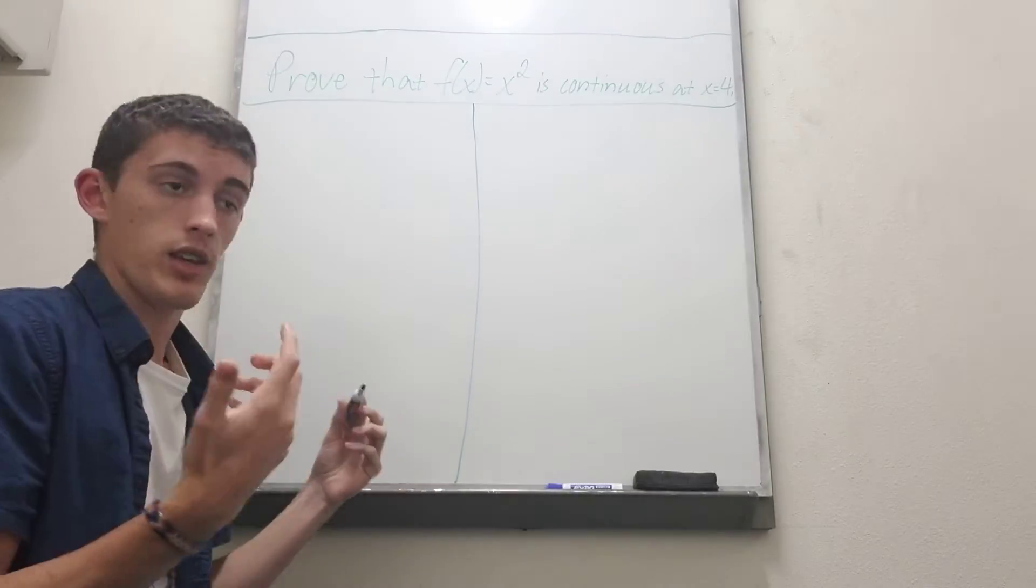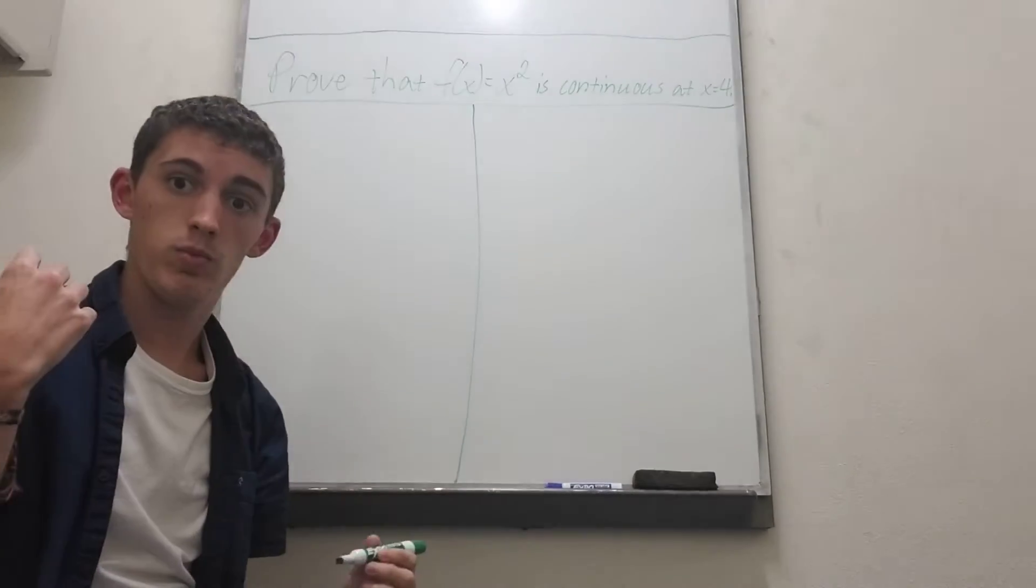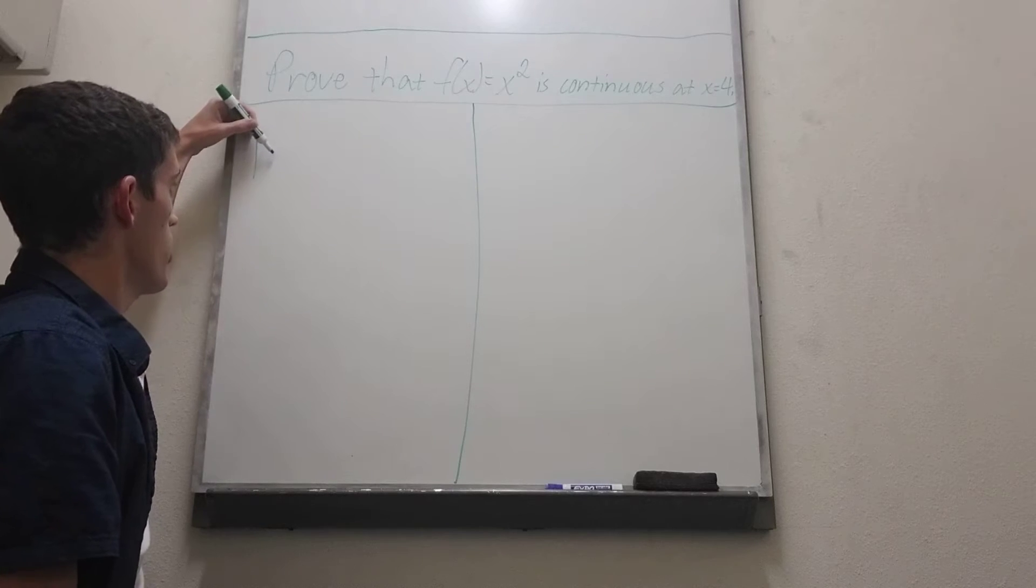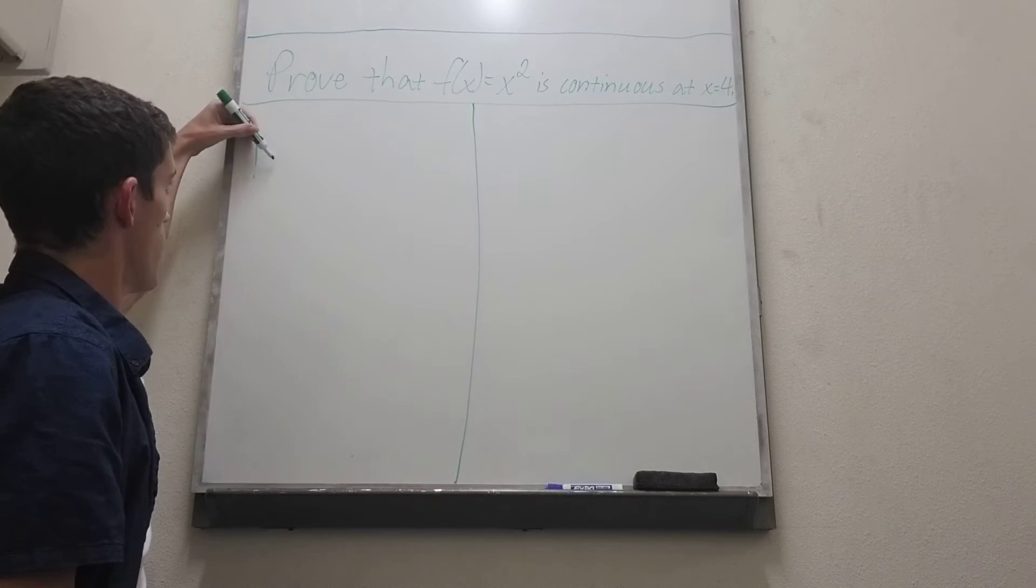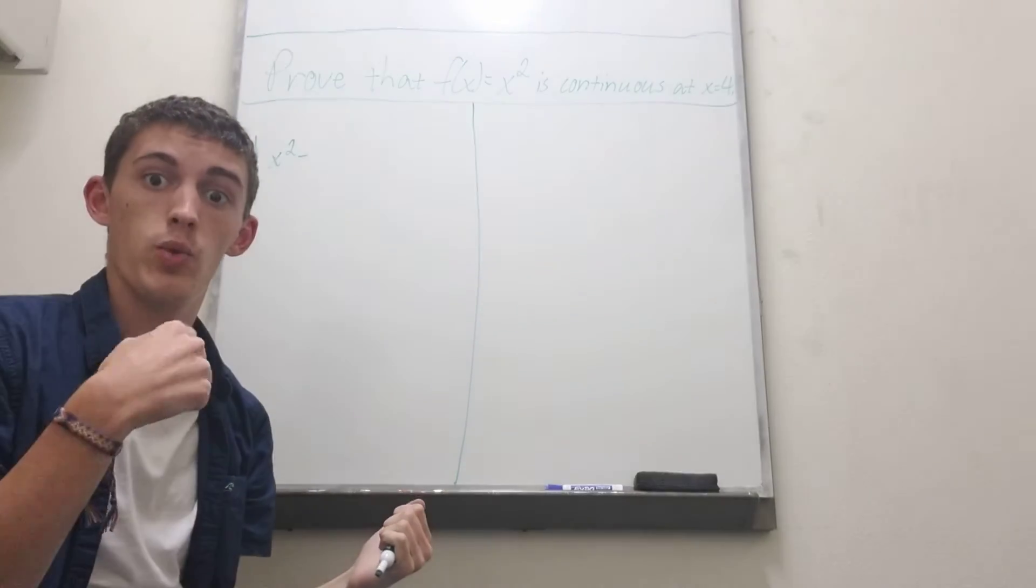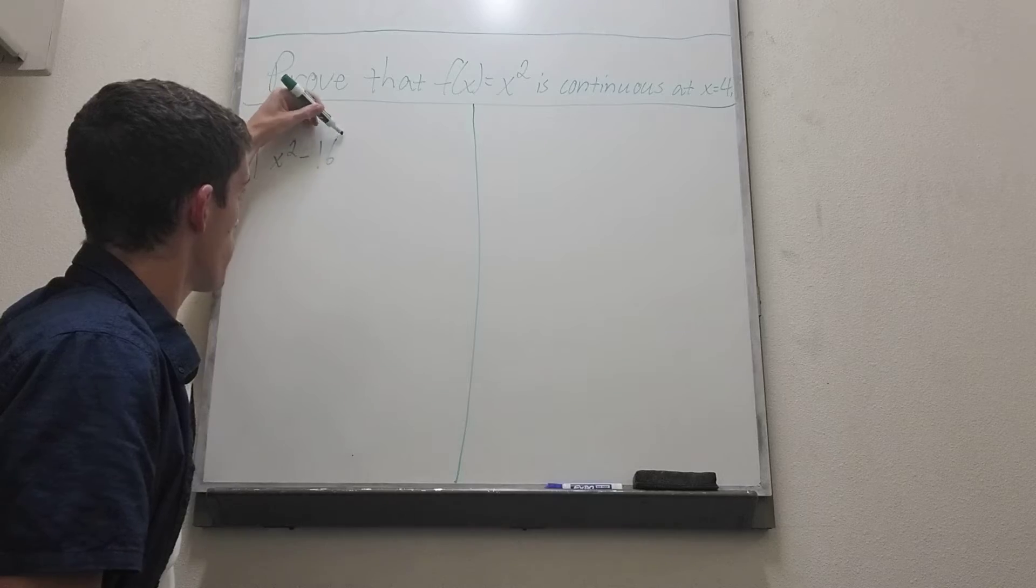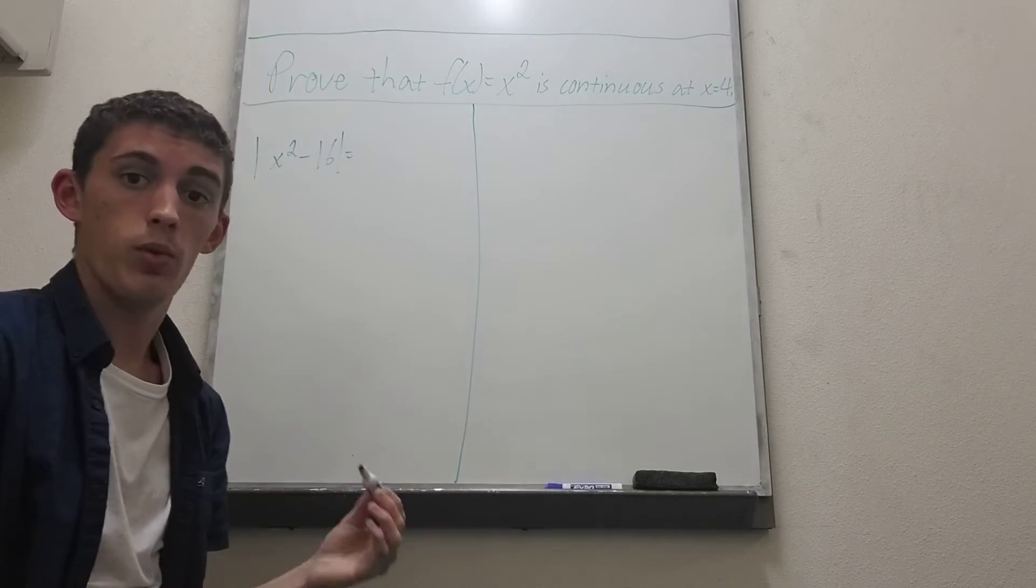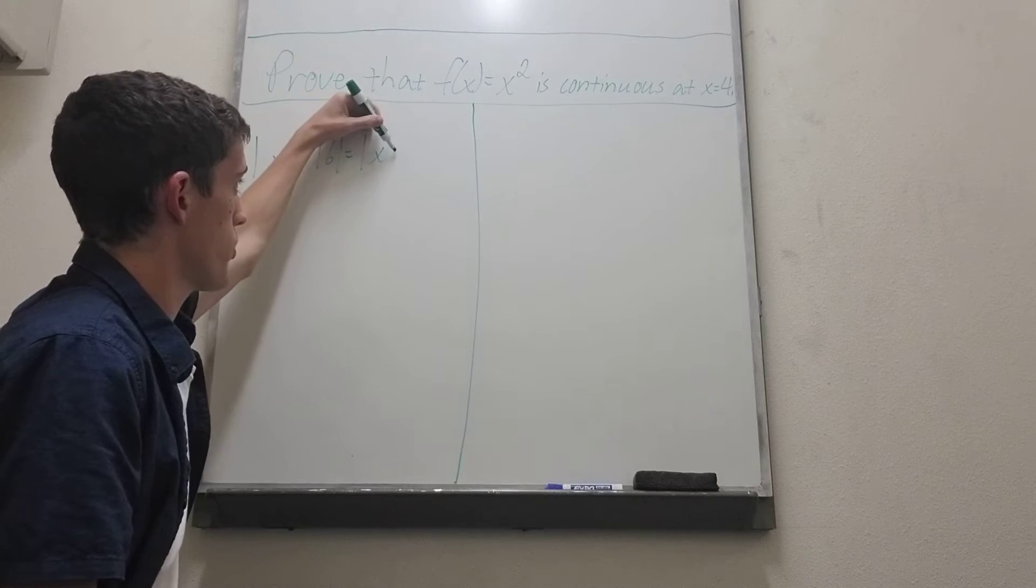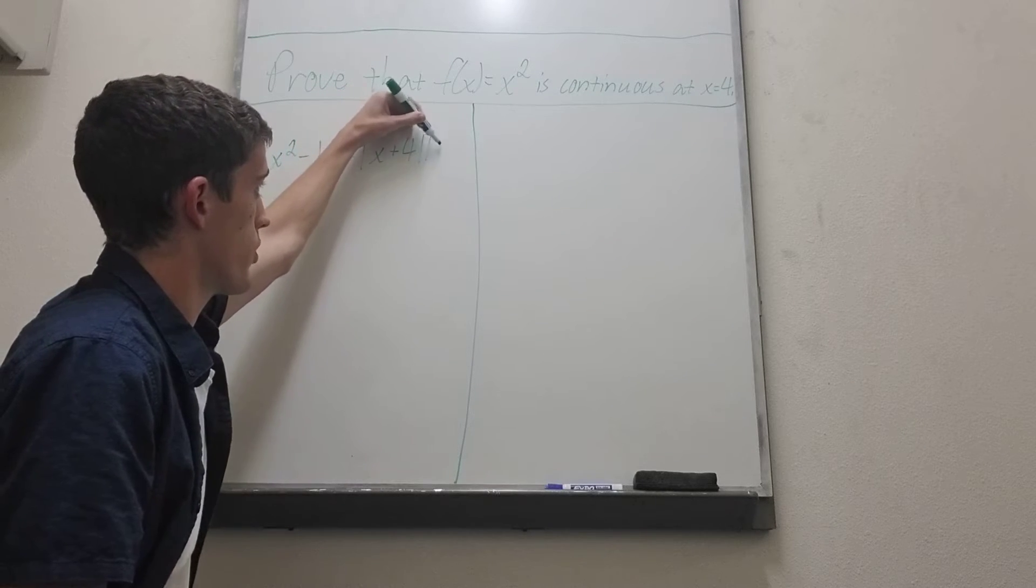So when we think about this inequality that we're going to have to do, it's going to be the function x squared minus the value at x equals 4 which is 16. So what we can do is factor this. When we do this we get absolute value of x plus 4 times absolute value of x minus 4.